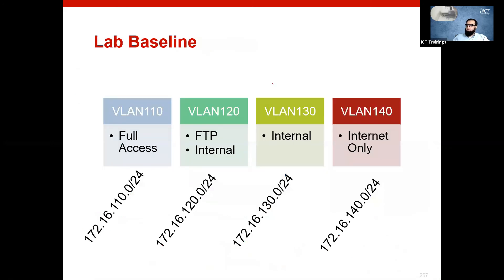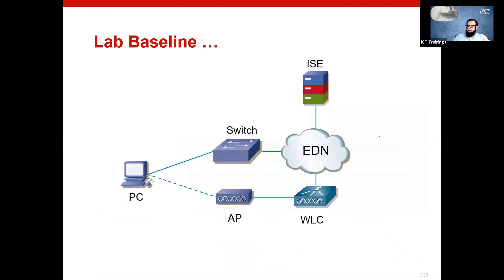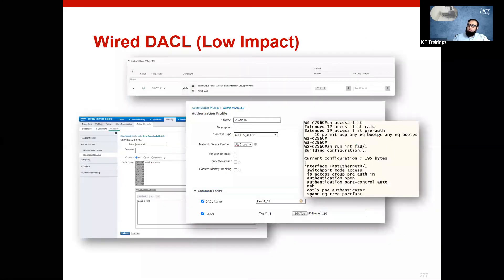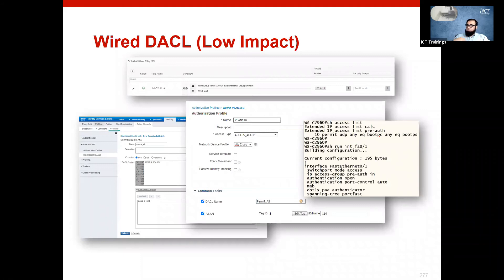We have four VLANs: VLAN 110 with full access, 120 with FTP and internal, 130 with internal only, and 140 as a guest VLAN where we only allow internet. This covers the downloadable ACL feature on ISE, which is used to configure low impact Network Admission Control.